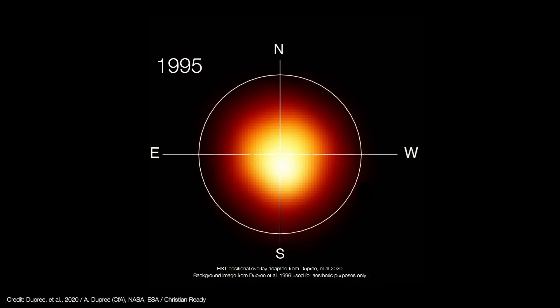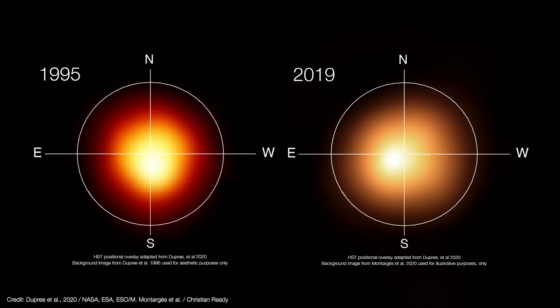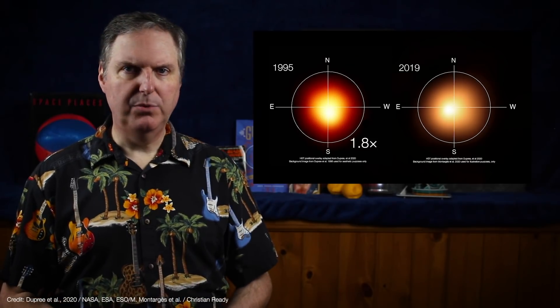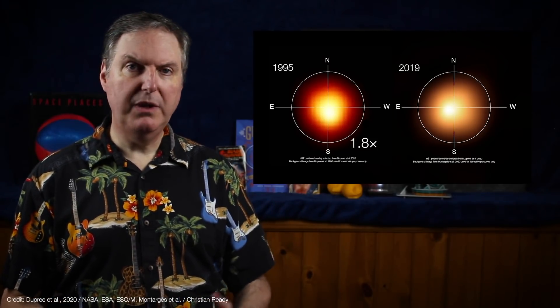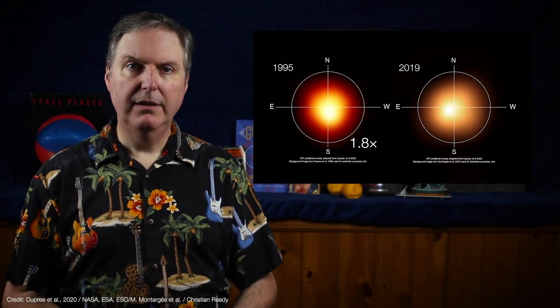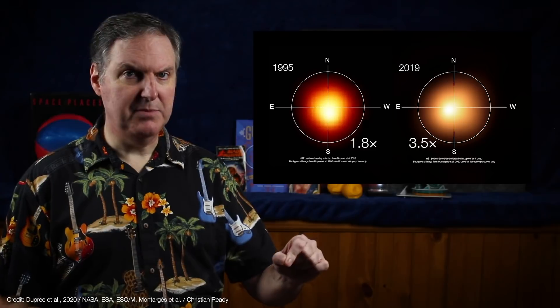In 1995, Hubble measured a similar phenomenon in Betelgeuse's southwest region with its first generation spectrograph and faint object camera. They showed a noticeably brighter region in the southwest, right where the extra UV emission was measured at the time. So it's likely that there was a similar bright region in the southeast region from September through November 2019, though Dupree's team only used Hubble's spectrograph this time, so there aren't any pictures. In 1995, the bright area was at most 1.8 times brighter than the surrounding disk. The 2019 brightening was 3.5 times brighter.